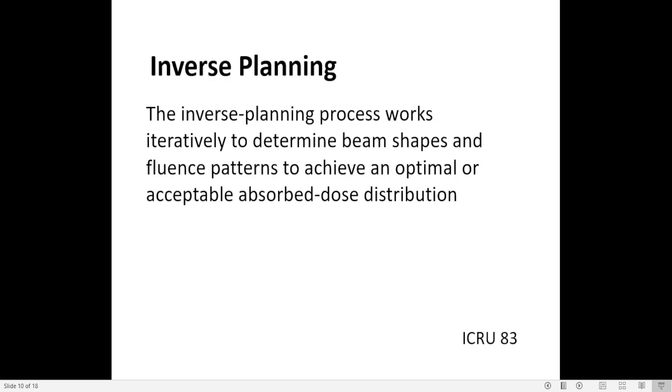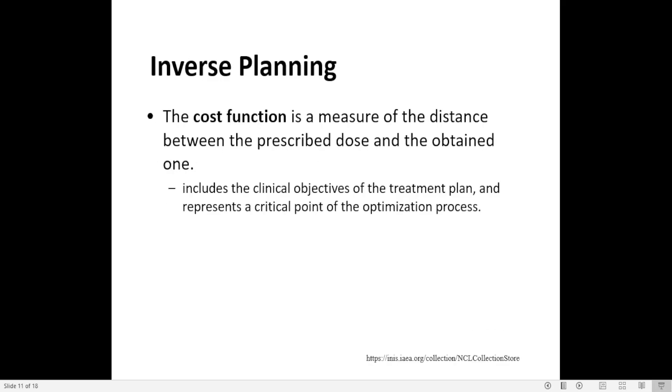In IMRT treatment, plan parameters are determined from the prescribed dose distribution by means of an optimization procedure on appropriate cost function. The cost function is a measure of the distance between the prescribed dose and obtained one, includes the clinical objectives of the treatment plan, and represents a critical point of the optimization process. The optimization algorithm attempts to minimize the overall cost at each iteration until the desired goal or close to it is achieved.